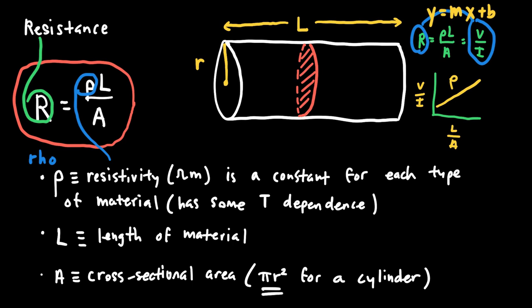When comparing two different pieces of the same material — say two pieces of graphite — they should have the same resistivity even though they have different lengths and areas. The longer piece will have more resistance. If two pieces of graphite have equal length but one has a bigger cross-sectional area, the one with the bigger area will have a smaller resistance.